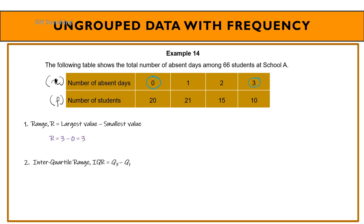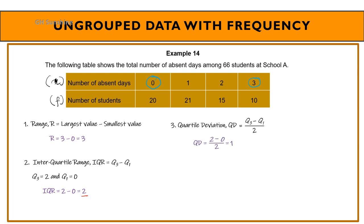Second, inter-quartile range: from the previous example, Q3 equals 2 and Q1 equals 0, therefore IQR equals 2 minus 0, which is 2. Next, quartile deviation: Q3 minus Q1 divided by 2, therefore QD for this example equals 1.